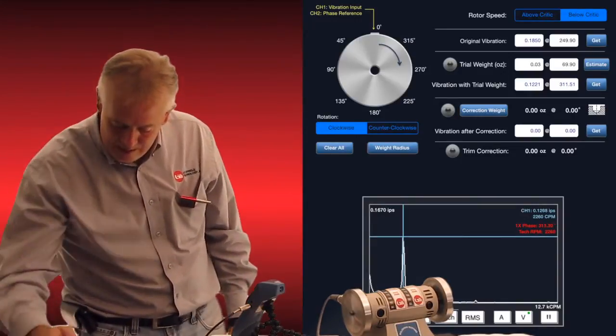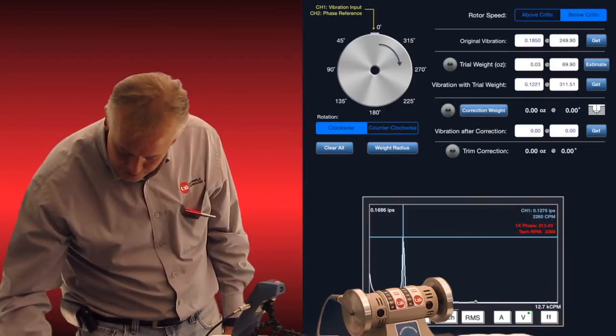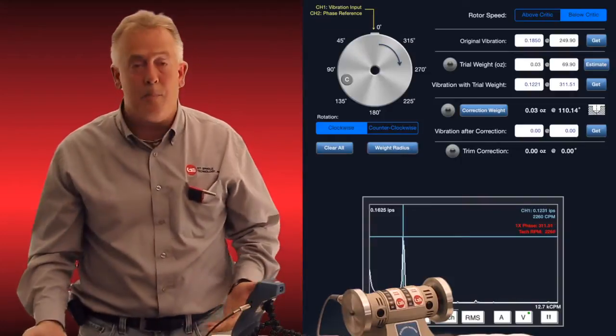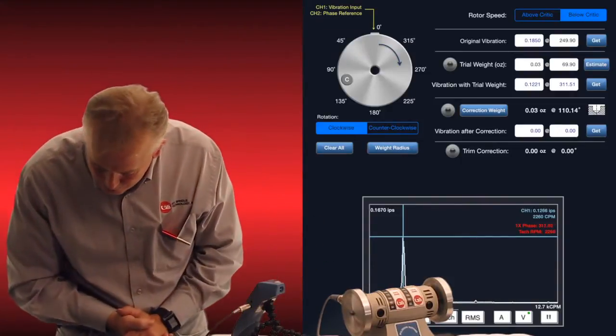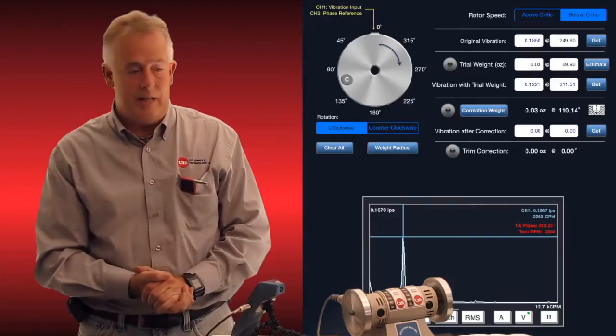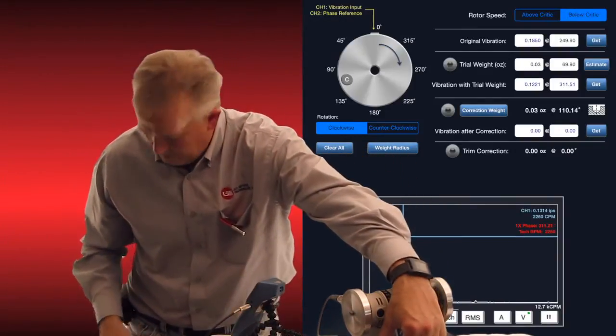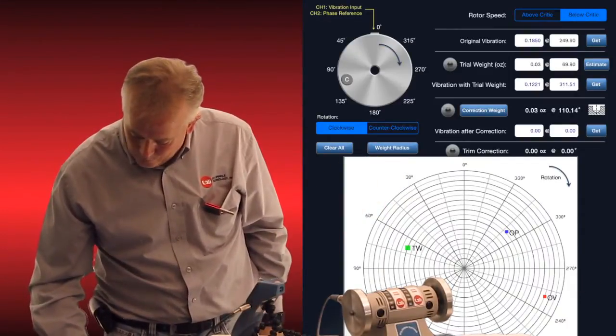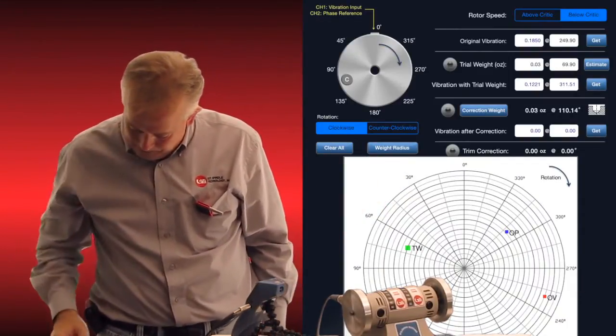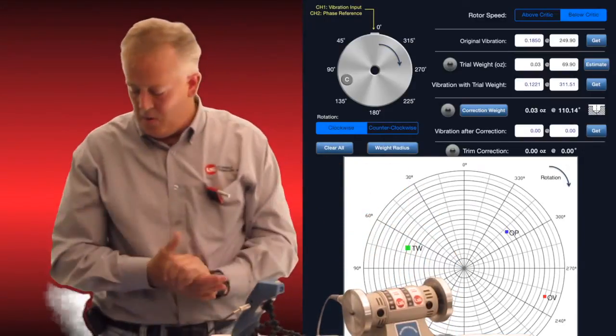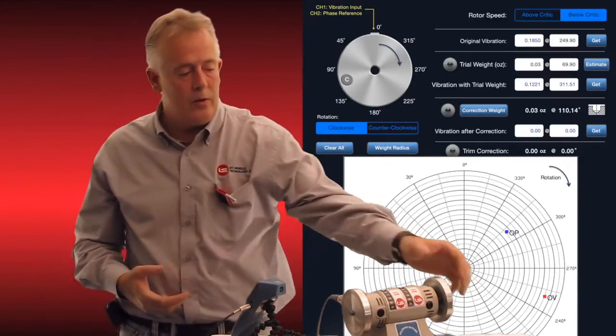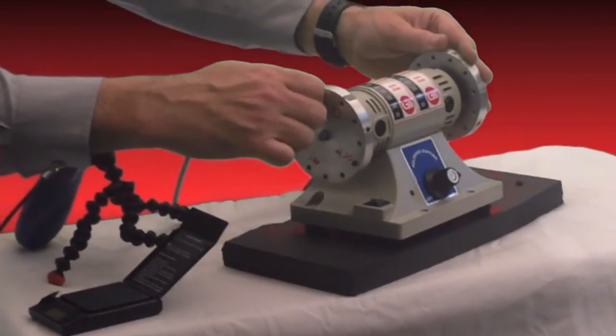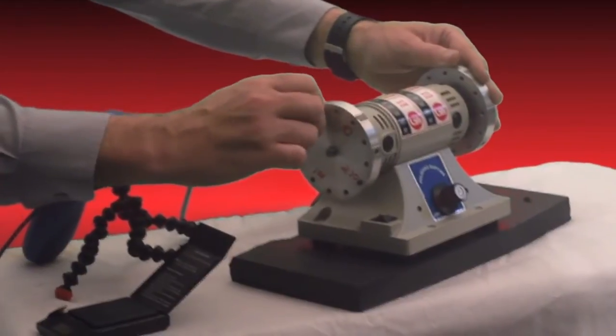So when we hit the next button down in the row here, correction weight, I'll tap that. It's going to tell me to put exactly 0.03 ounces, which is the size of my screw, at about 110 degrees. So let's do that. And let's look at the polar plot. I'm going to switch over to see exactly where it wants us to put that correction weight. So we're going to turn our motor off. And we're going to remove that correction weight that we had at 60 degrees and we're going to move it more towards 100 degrees.